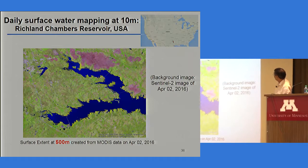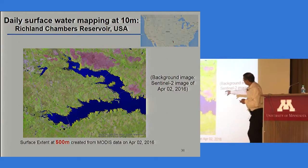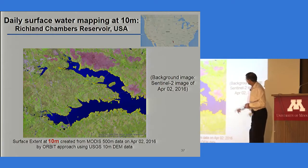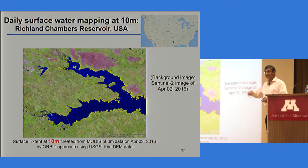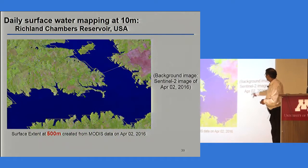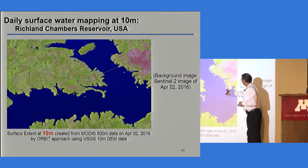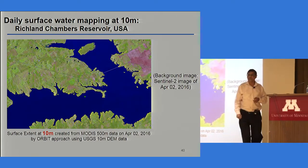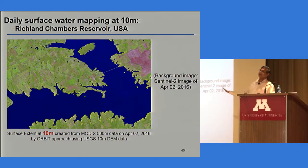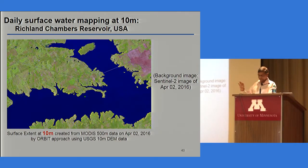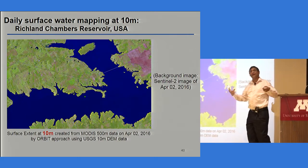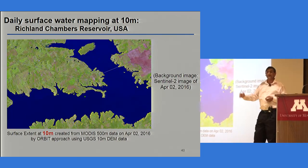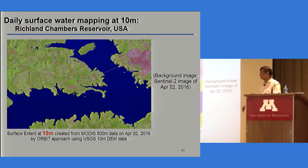To give you a sense of mapping at 10-meter resolution, here is the Richland Chambers reservoir in the USA. This is the MODIS map, which is pretty jagged, and this is mapped down to 10-meter resolution. We're not looking at the Sentinel image — we're just using MODIS data and some mathematics to get there. You can see the reconstructed result perfectly without looking at the Sentinel data — the background is Sentinel data, but we're using MODIS data and reconstructing that. This gives you a sense of the possibilities that machine learning can do. This can be done now for every place in the world every day, going back at least 18 years to the MODIS era.